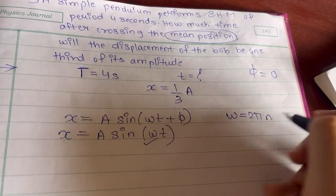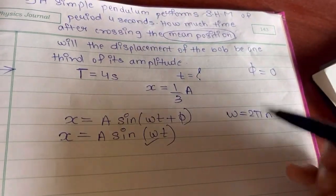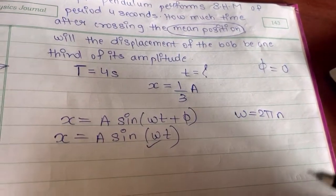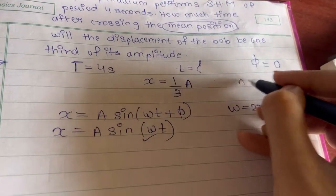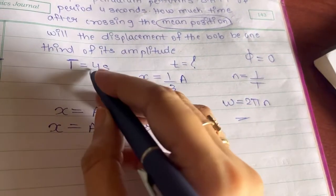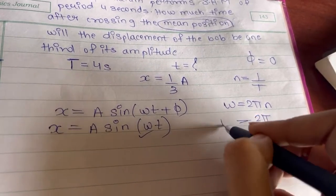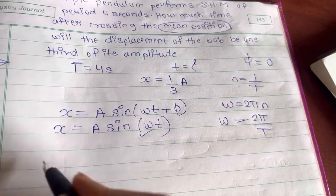But do you have n in the question? n is frequency. Do you have the value of frequency given in the question? No. So we also know that frequency is equal to 1 upon time period. And we have the value of time period. So we will write in place of n, 1 upon T. So from here we can calculate omega.